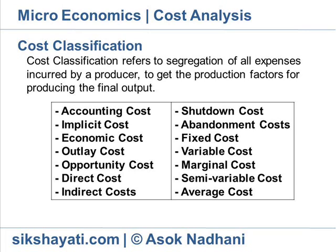Direct costs are costs directly identifiable with a particular product — for example, raw materials used in manufacturing a product. Indirect costs are normally common costs which cannot be identified with a particular product — for example, repairing a building, manager's salary, depreciation, etc.